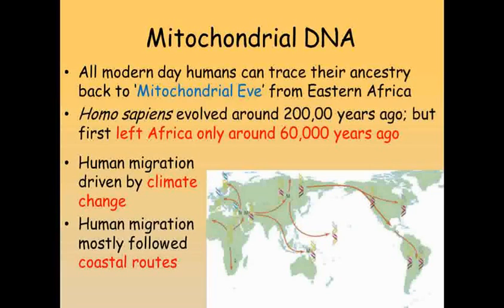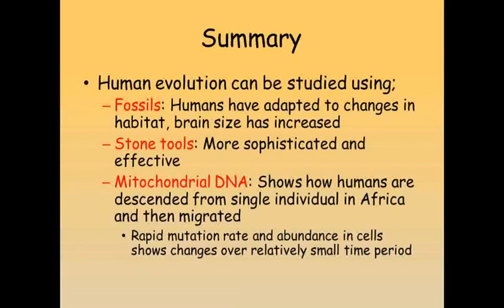So, human evolution can be studied by examining fossils, studying stone tools, and by looking at mitochondrial DNA. Fossils tell us how humans have adapted to a change in habitat and that brain size has increased. Stone tools have become more sophisticated and effective as larger brains have allowed humans to make better tools. Mitochondrial DNA has been used to study recent changes in human distributions and migrations, as the rapid mutation rate and abundance within cells makes it easier to study changes than nuclear DNA.